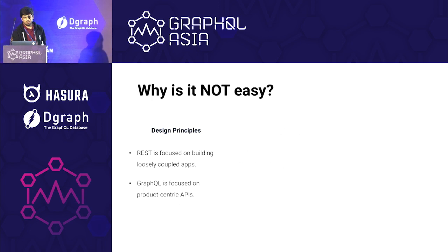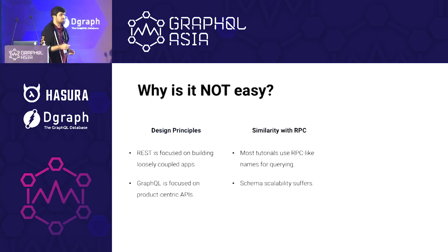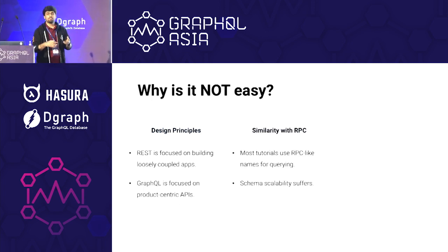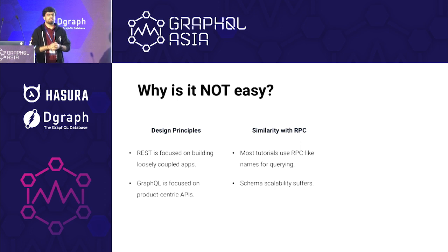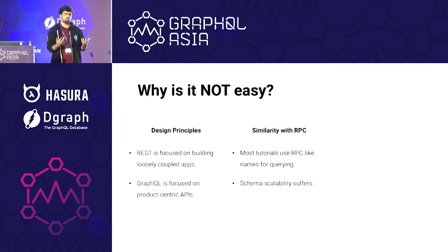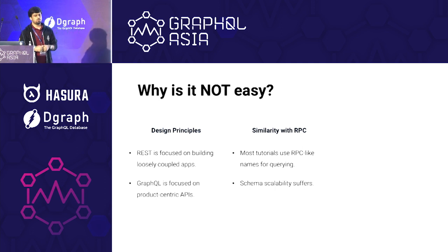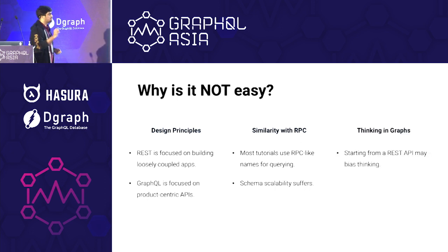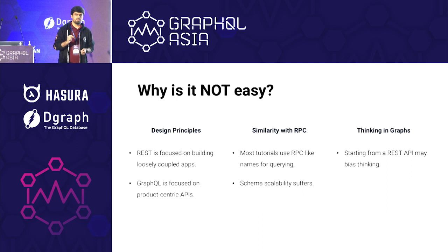Moreover, GraphQL has similarity with RPC. Even in Getting Started tutorials, you're going to see things like Get User, Get Accounts, or Get Movie, which gets you to think it's very similar to RPC. And down the line, you may end up building schemas which do not scale properly. Lastly, the reason I think is the most difficult is because thinking in Graph itself is difficult.